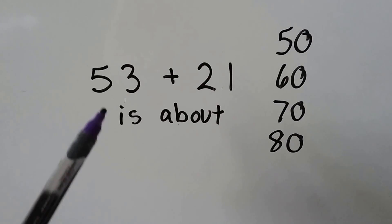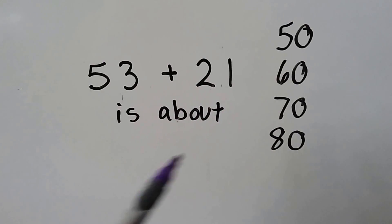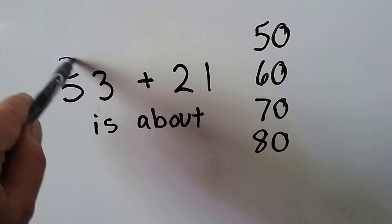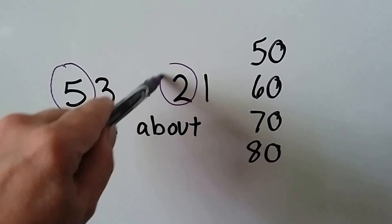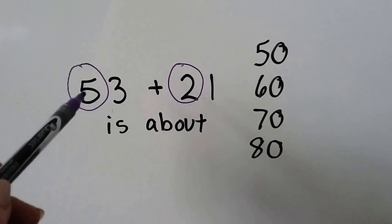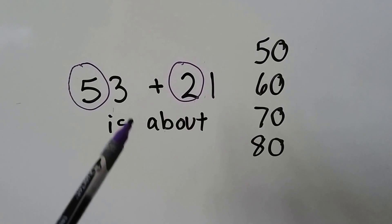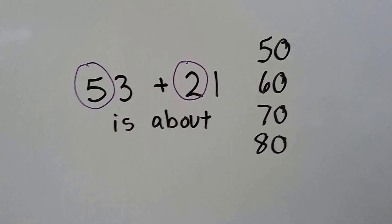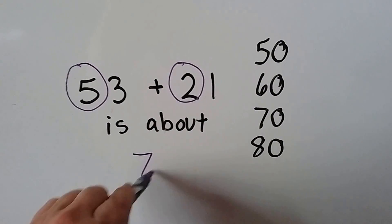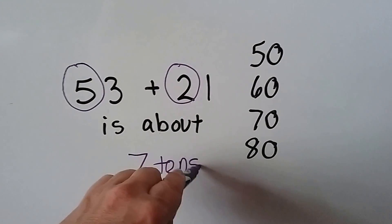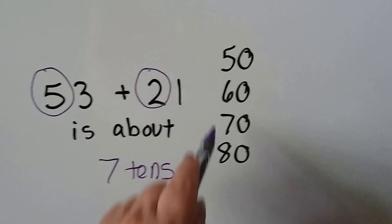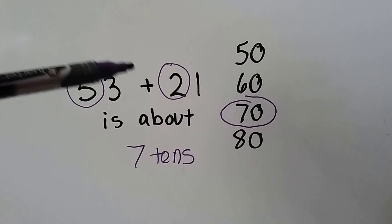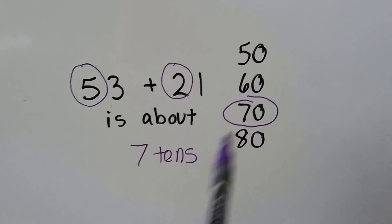Now we've got fifty-three plus twenty-one. We look at the tens: we've got five tens and we've got two tens. Five plus two is seven tens. And look at the ones place — there's not very many, is there? So it's about seven tens. And seven tens is seventy. So we can say fifty-three plus twenty-one is about seventy.